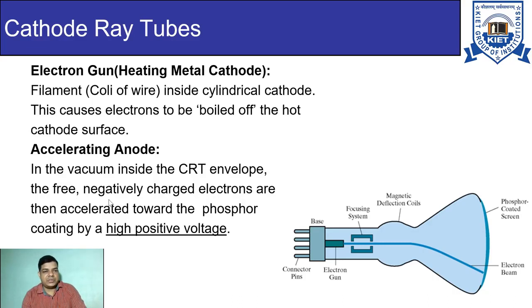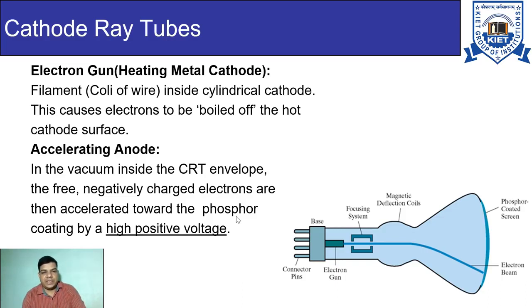We know that the anode is positively charged. Inside the vacuum of the CRT envelope, the free negatively-charged electrons are accelerated towards the phosphorus coating by a high positive voltage. Since electrons are negatively charged and the voltage is positive, the positive voltage attracts the electrons.